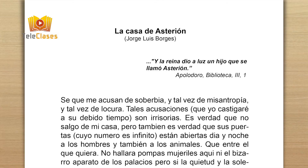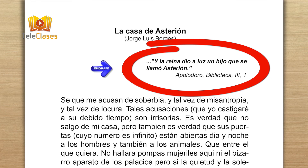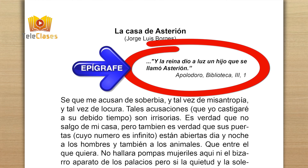Uno de mis autores predilectos que he descubierto en esta época es el escritor argentino Jorge Luis Borges, un maestro del cuento. Observad cómo él utilizó la intertextualidad en esta narración. Aquí podéis fijaros en que el autor, antes de iniciar la narración, ha incluido un breve fragmento de una obra de otro autor. Este recurso se llama epígrafe y es un tipo de intertextualidad explícita, porque está claramente señalada. El epígrafe es escogido por el autor o autora porque tiene algún tipo de relación con lo que vamos a leer y nos prepara así para ingresar en el contenido.